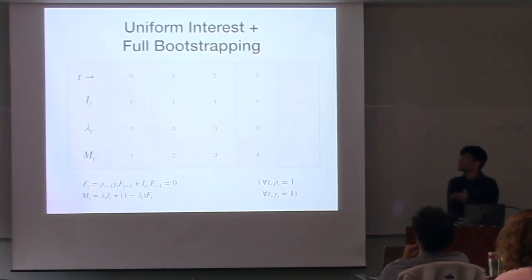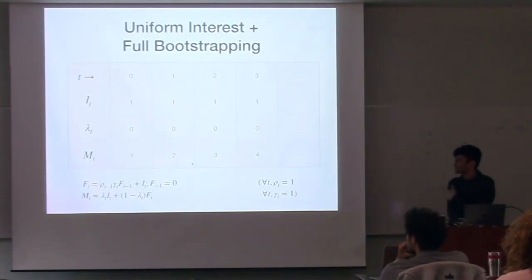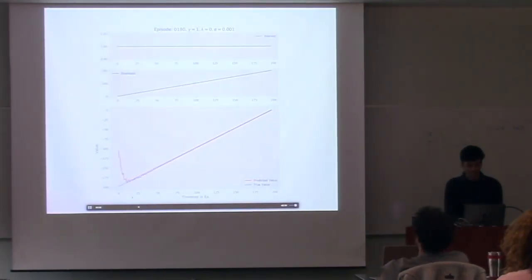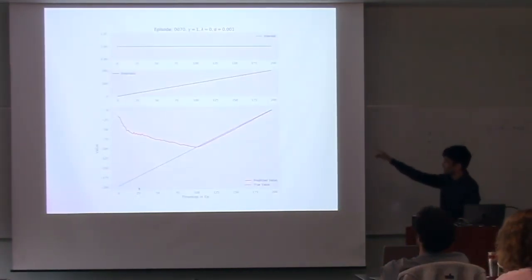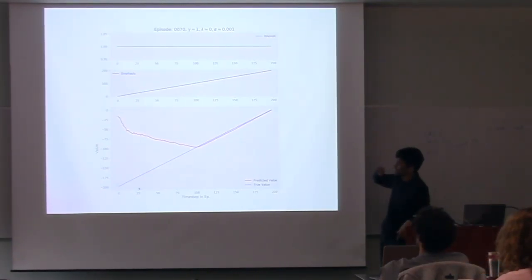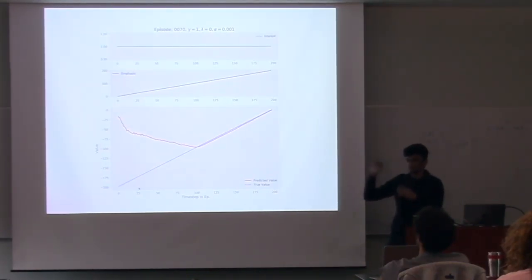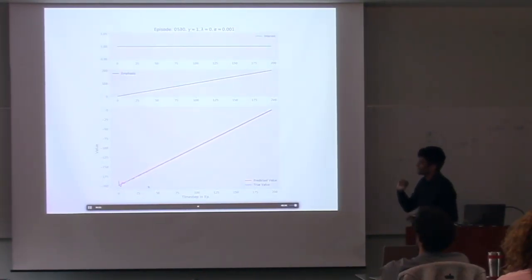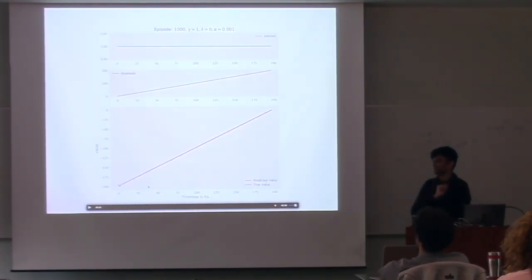Then you have uniform interest with full bootstrapping. You have interest everywhere for all states with full bootstrapping. This is a particularly interesting case where you get a basically linearly increasing emphasis. What you see is that it learns the values for the states towards the end of the episode quite well. But states at the beginning have low emphasis, so they're updated quite small, and you have this interesting behavior where the values of states towards the beginning of the episode stay close to the initial values for a while.